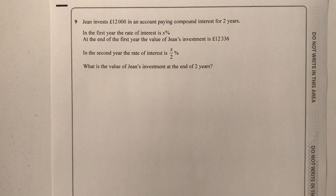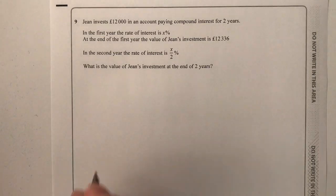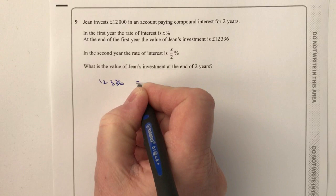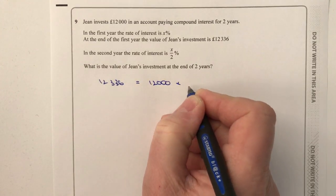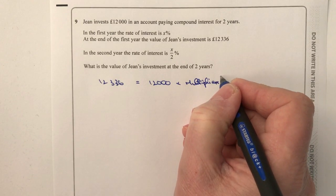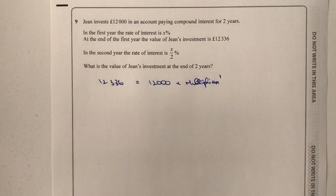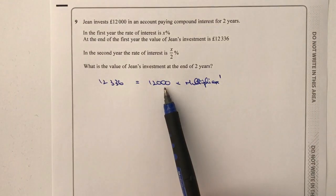Question nine: Jean invests £12,000 into an account paying compound interest for two years. In the first year the rate is x%, and at the end of year one the value is £12,336. We can use the formula: amount equals initial investment multiplied by the multiplier to the power n. Here n equals one, so 12,336 divided by 12,000 gives a multiplier of 1.028.